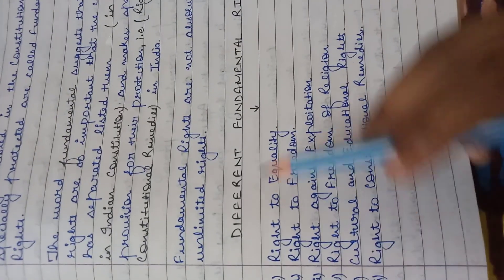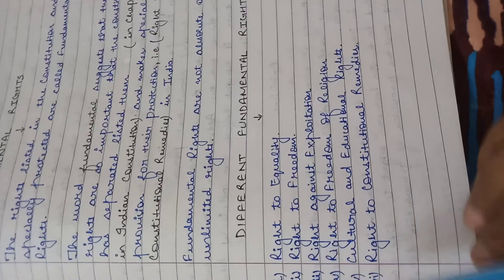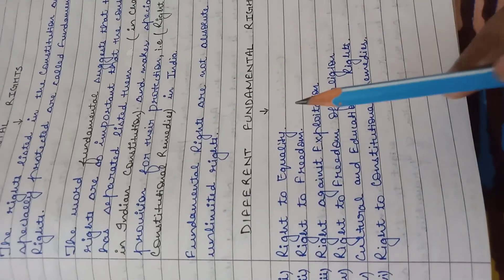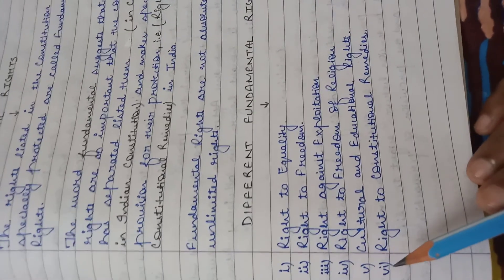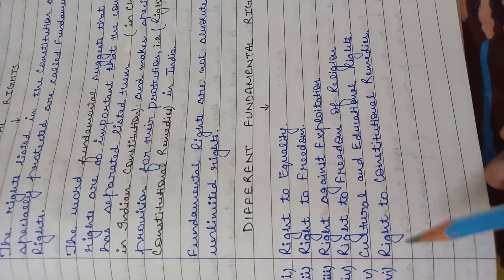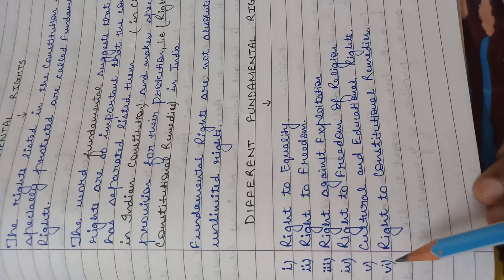So now let us start with the different fundamental rights. Initially we had seven fundamental rights, and now we have six fundamental rights in our Constitution. The seventh fundamental right is a debate which you will read later on.